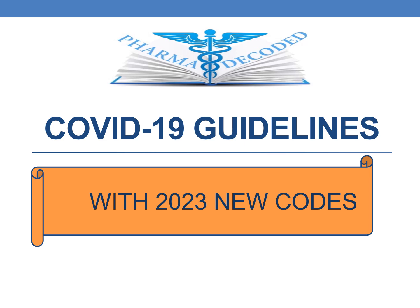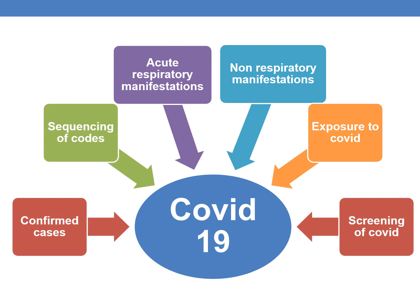Hello everyone. Let us discuss the 2023 ICD-10-CM coding guidelines for COVID-19 or coronavirus. In the current session, we will be focusing on various aspects: when COVID-19 should be coded — it should be coded in confirmed cases only — the sequencing of codes, the acute respiratory manifestations of COVID-19 infections, the non-respiratory manifestations, and the code for exposure to COVID and the code for screening of COVID-19 infection.